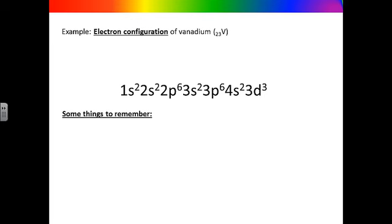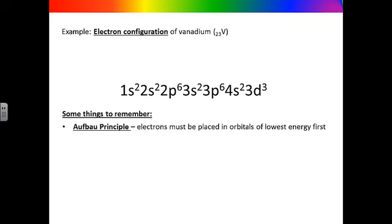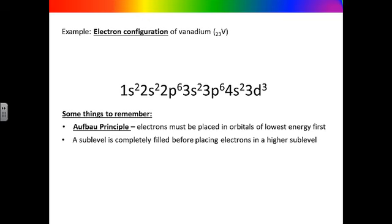There are some things you will need to remember when writing electron configurations. The Aufbau principle states that the electrons must be placed in orbitals of lowest energy first, meaning electrons are always placed in the 1s orbital first. A sublevel must be completely filled before placing electrons in a higher sublevel. For example, there must be two electrons in the 1s sublevel before an electron can be placed in the 2s sublevel. The last sublevel may or may not be filled — for example, the d sublevel can hold a maximum of ten electrons because it has five orbitals, but vanadium has only three electrons on the d sublevel.